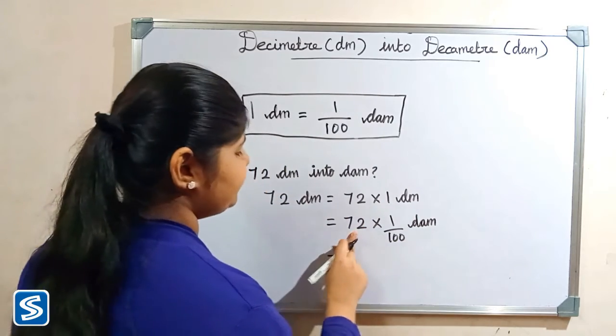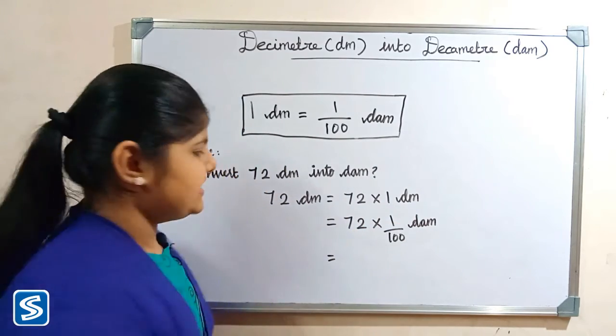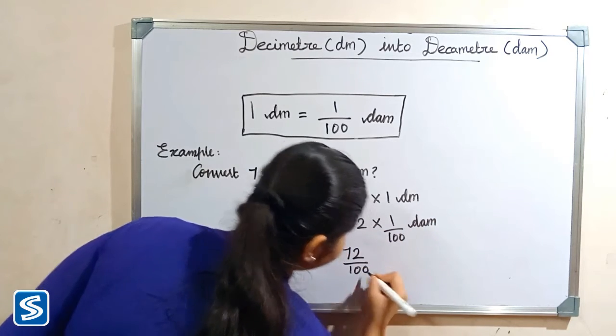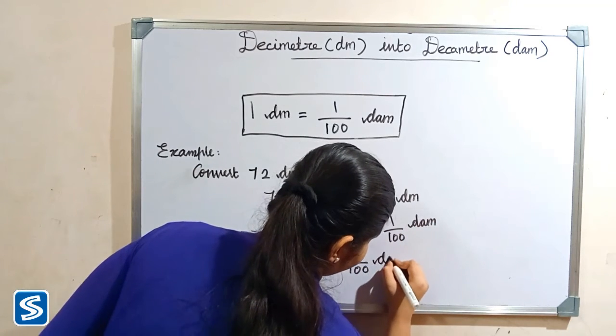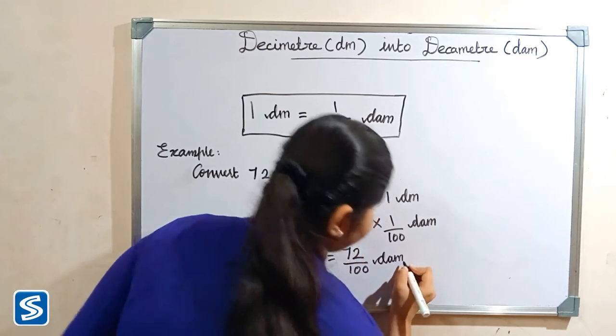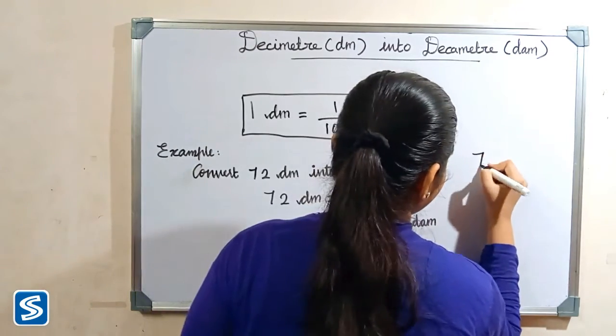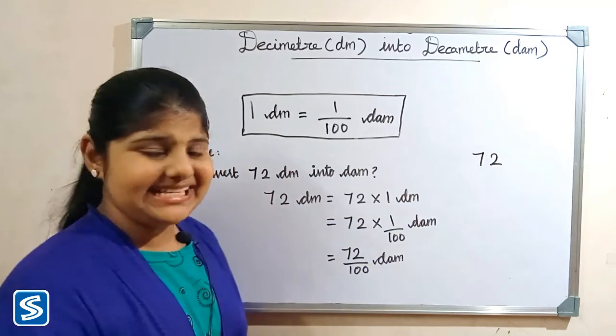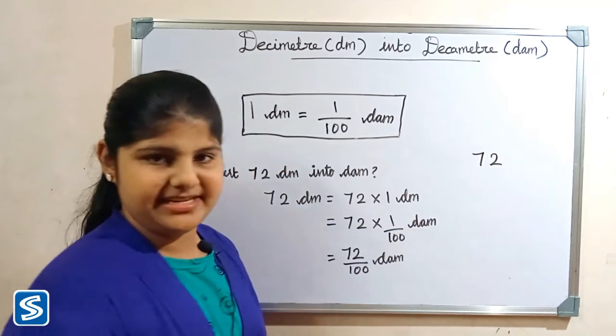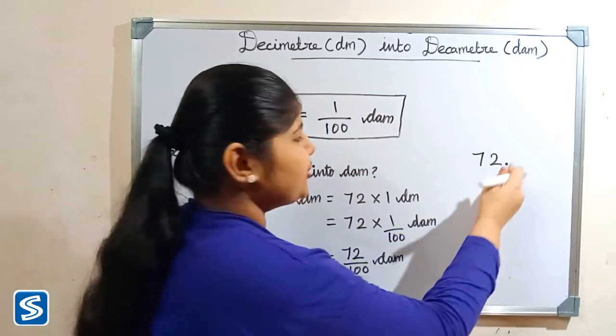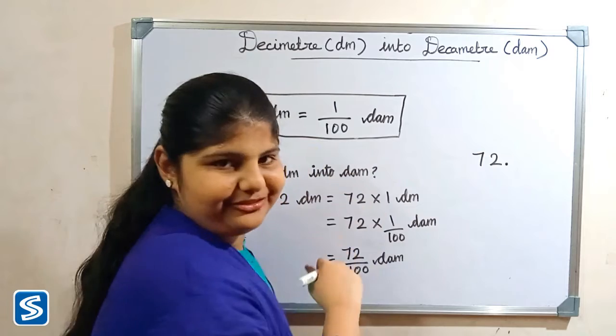So 72 multiply 1 will be 72, so 72 by 100 decameter. The easy way to divide by 100 is to move the decimal point two places to the left.